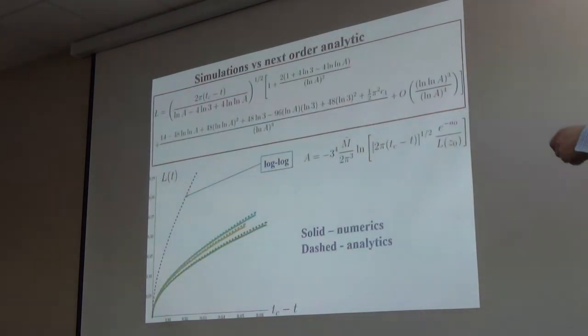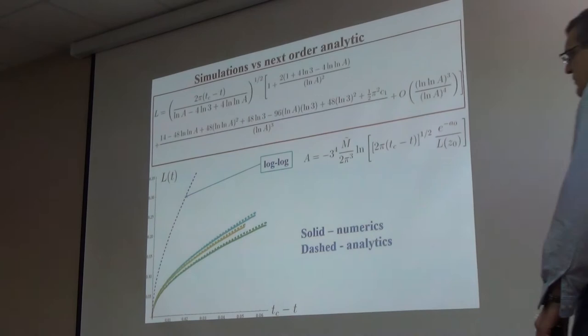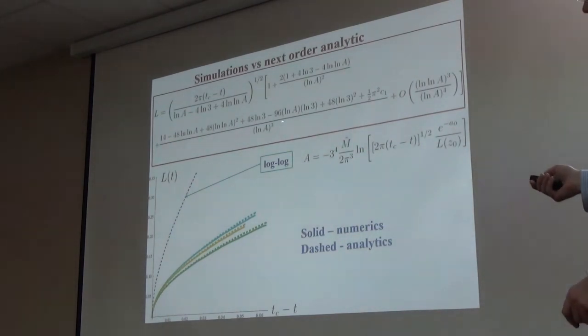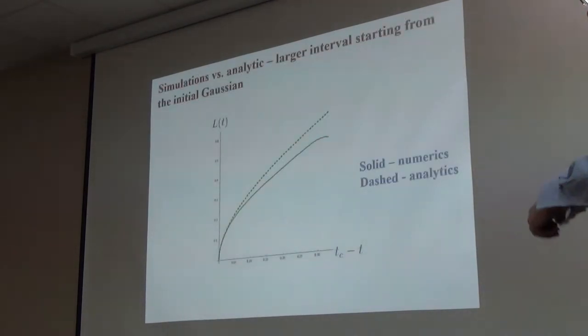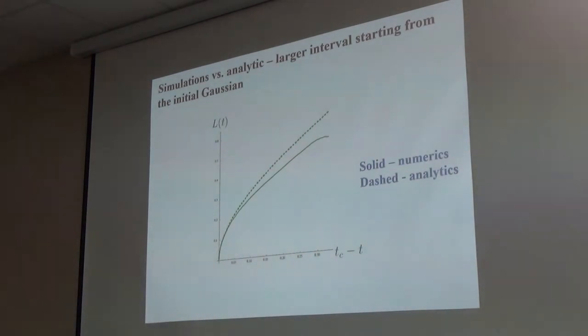Now let's compare this with numerics. This is result L of T as a function of Tc minus T. Near collapse L goes to zero. Solid lines are numerics for different initial conditions and this dashed line is just the values from this formula. This result is a previous classical result on log-log scaling which is really far away from any reasonable numeric simulations. What we can do after we have a much more accurate formula - remember logarithm A is approximately logarithm of Tc minus T, so log of A is a double logarithm of Tc minus T. Double logarithm is recovered but it will be recovered at extremely high amplitude.